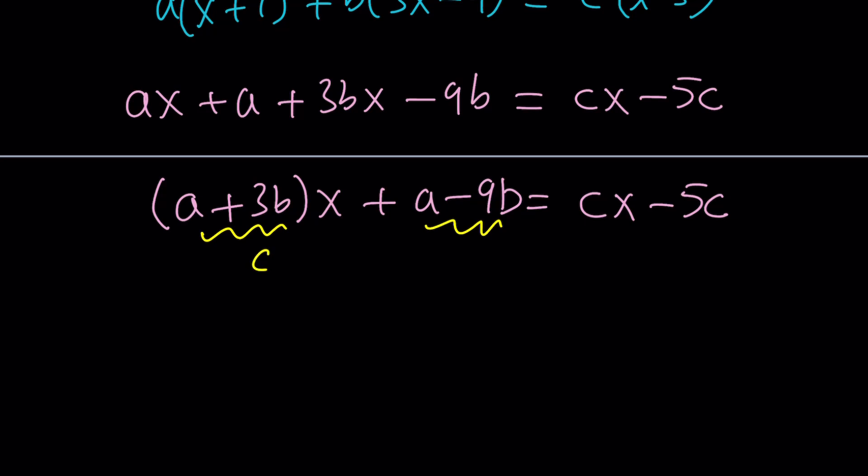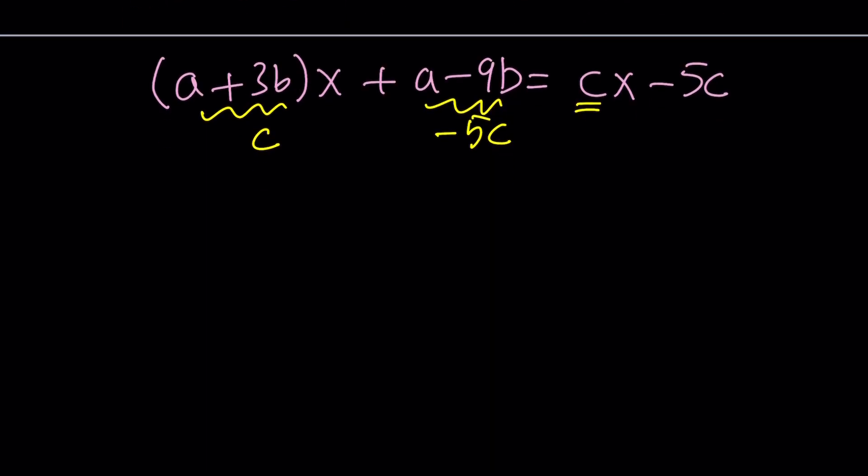So, from here, we can safely say that a+3b is equal to c, which is the coefficient of x, and the constant term is supposed to be -5c. Now, here's what's really nice about it. And that's why number theory is beautiful. That's probably why Gauss called it the queen of mathematics. I think. Is that Gauss, right? I believe so. Anyways. So, let's go ahead and write this as a system. a+3b is equal to c. And then a-9b is equal to -5c.